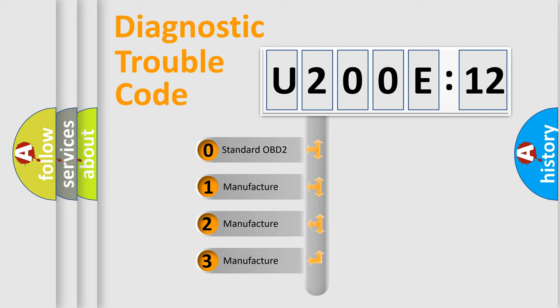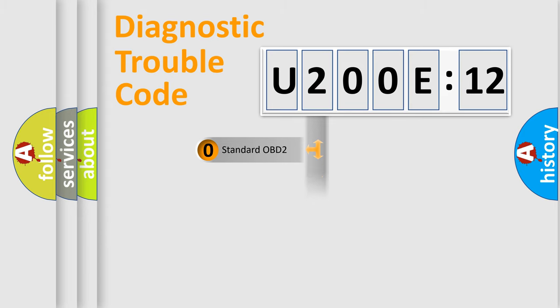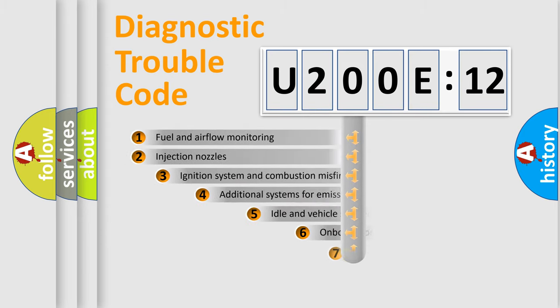If the second character is expressed as zero, it is a standardized error. In the case of numbers 1, 2, or 3, it is a manufacturer-specific expression of the car-specific error.